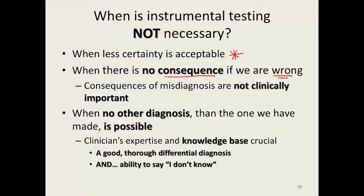Finally, when it's not possible that another diagnosis — other than the one I think I've correctly identified at the bedside — is present, instrumental testing is not necessary. That means I have to know all the possibilities, list those identifiable at the bedside versus those that cannot be, and if any possibility requires instrumentation to identify and might be present, then we have a problem. I need to be honest with myself about when it's uncertain whether the diagnosis needs instrumental detection.